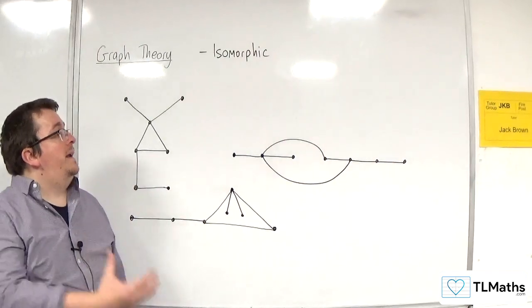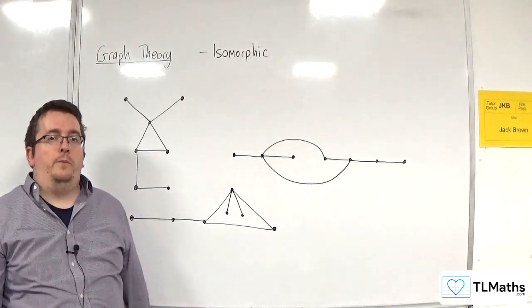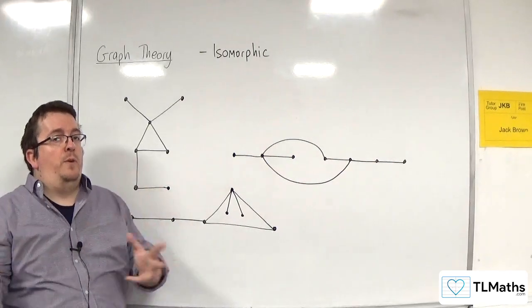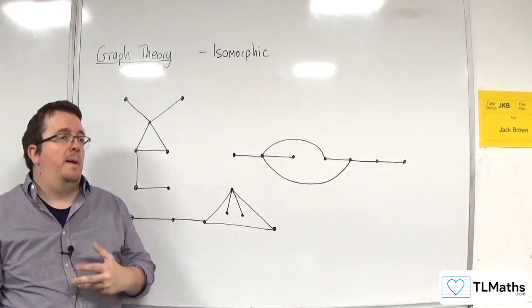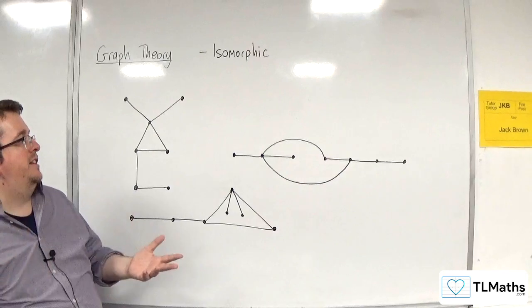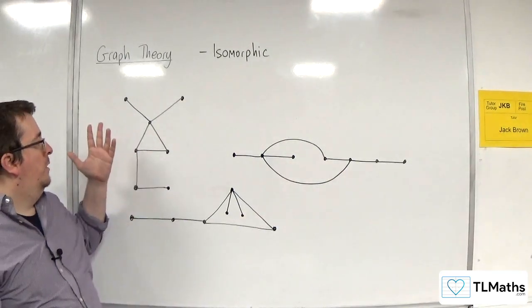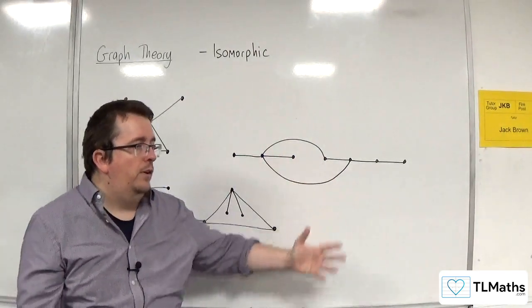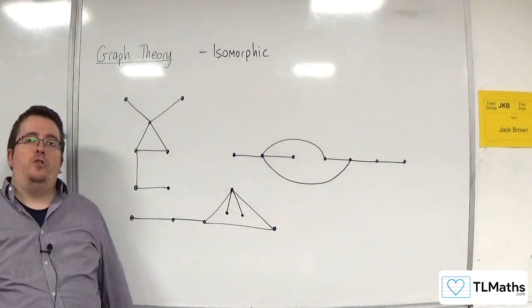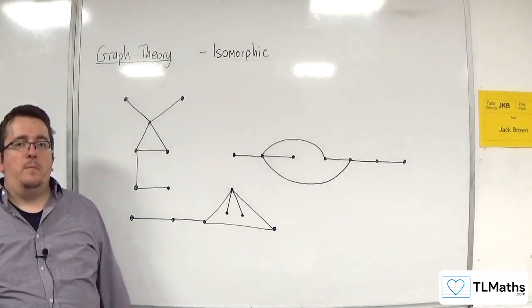Okay. So that is what it means for graphs to be isomorphic to one another. And because we've just done incidence matrices as well, the incidence matrix for all three of these would be the same because it should show exactly the same connections.